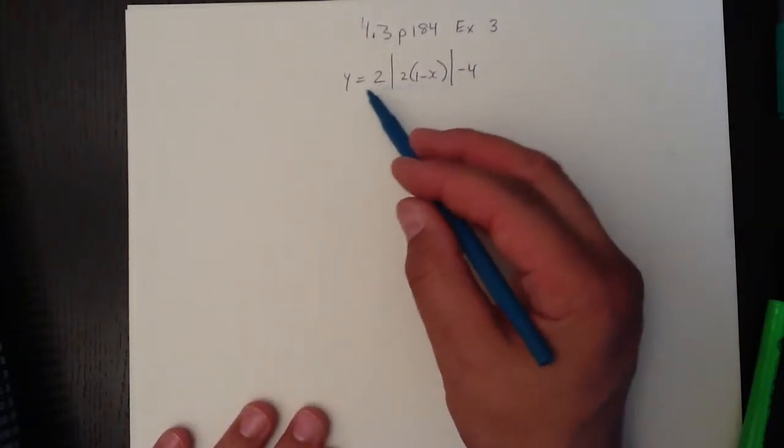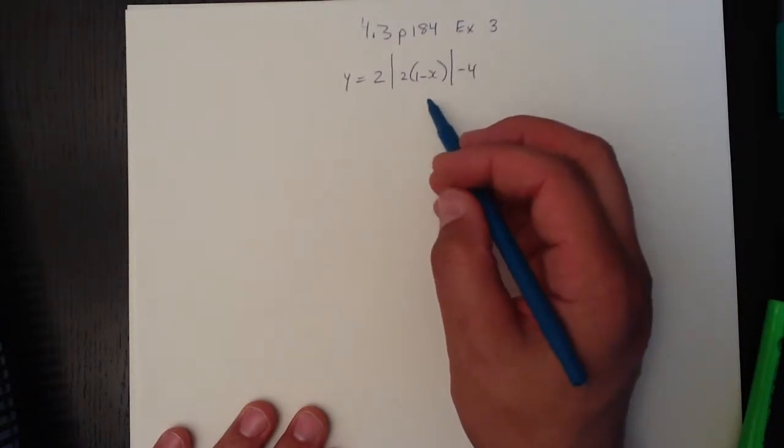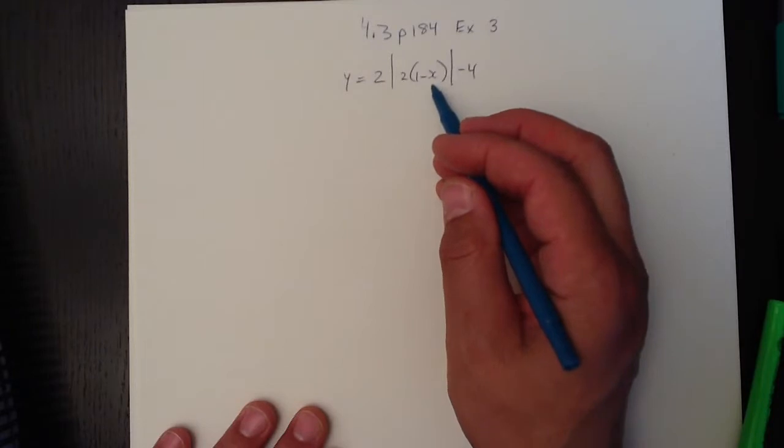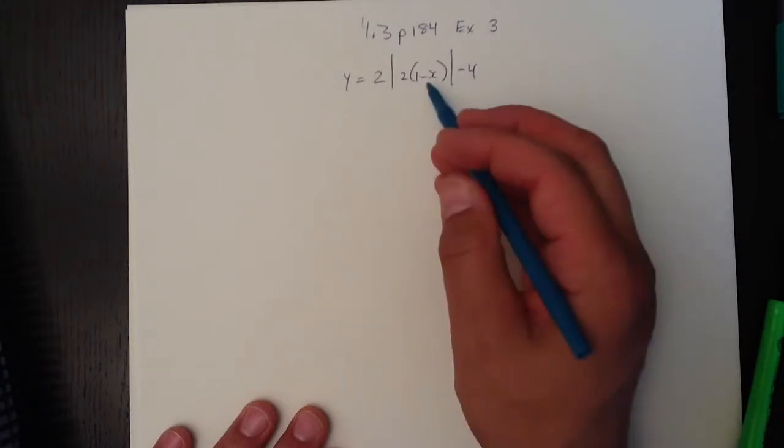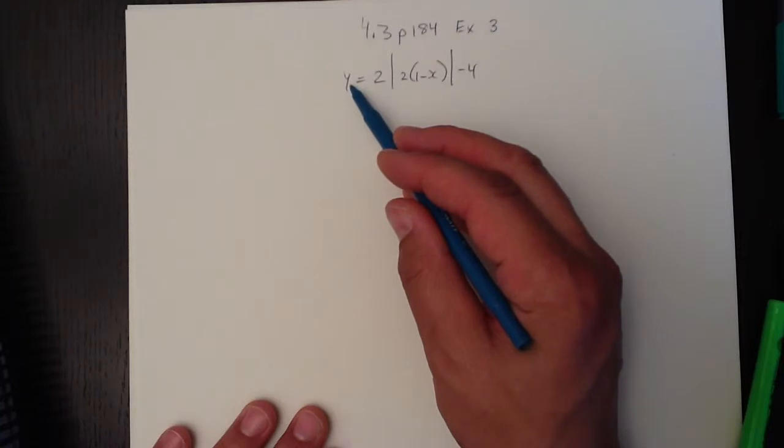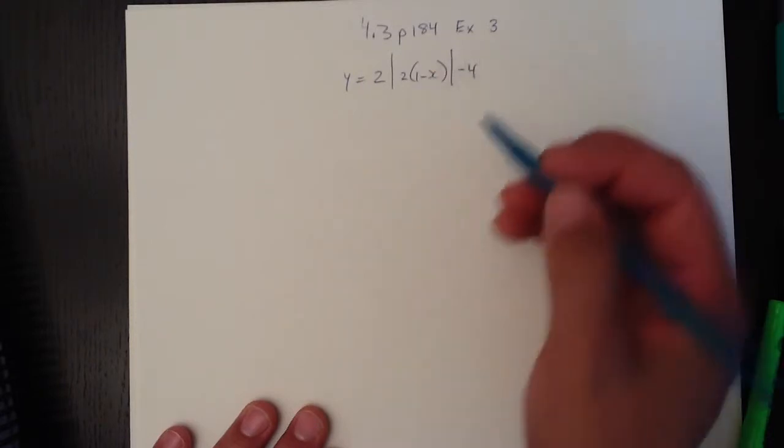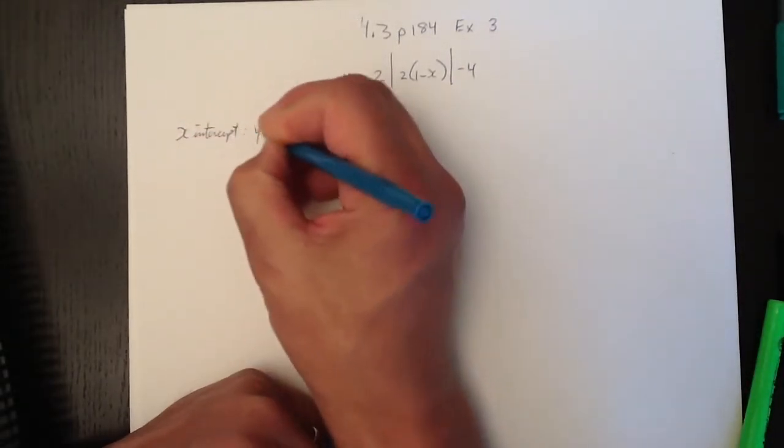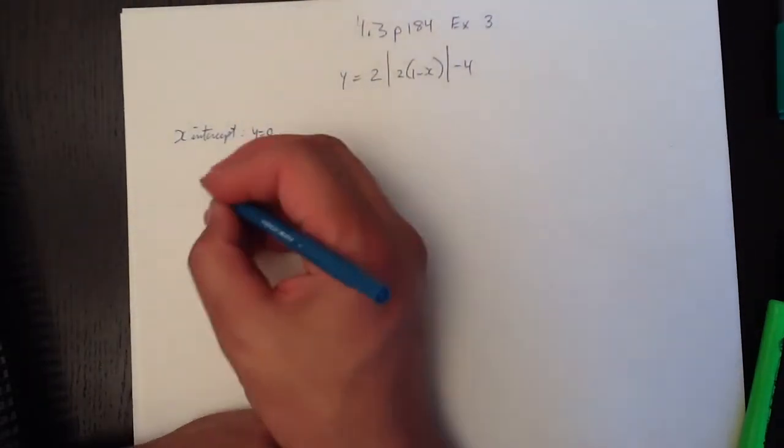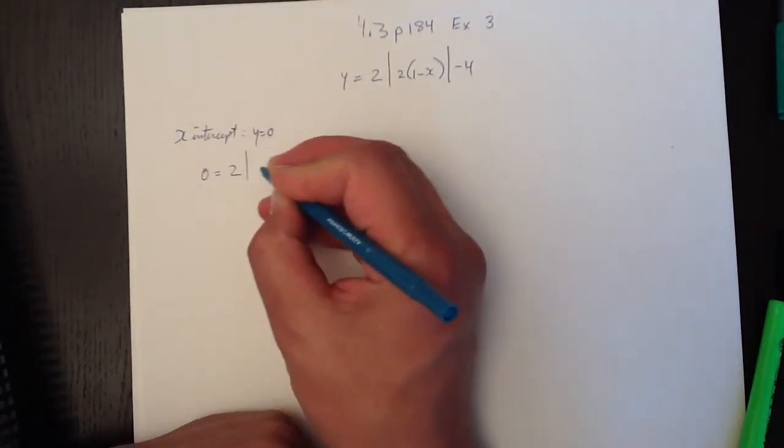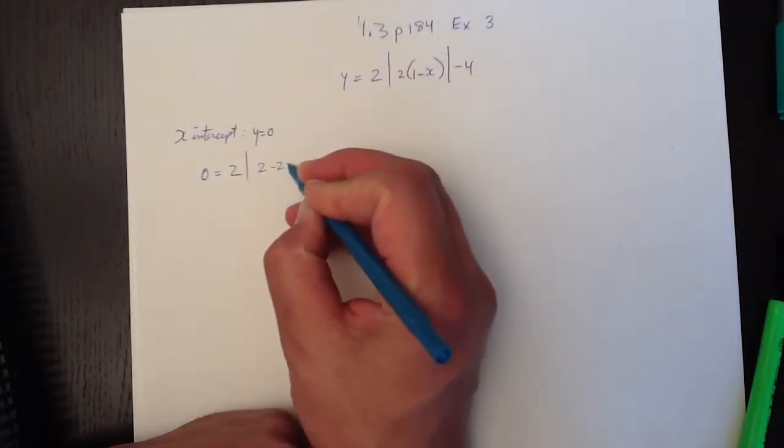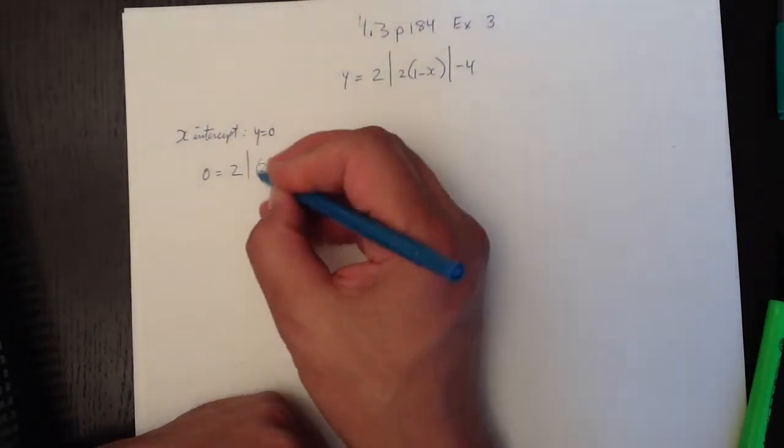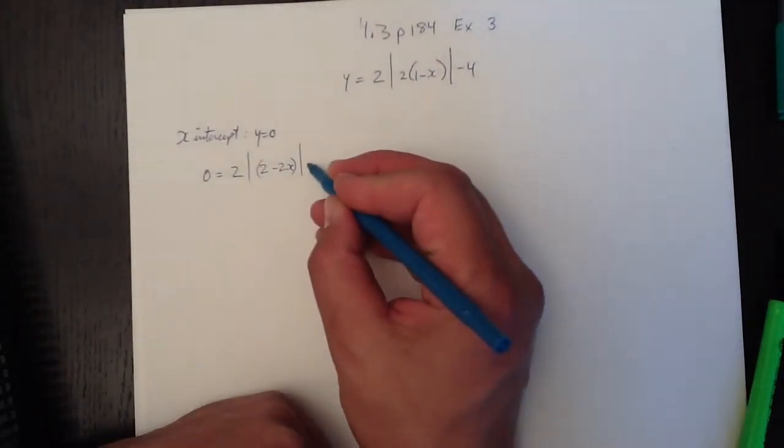So the intercepts will be where x equals zero, where x equals zero the graph will intercept the y-axis. Or sorry, where y equals zero, the line will intercept the x-axis. So x-intercept, y equals zero. So for y equals zero, we go zero equals 2 times the absolute value, I'm just going to work the 2 in there, 2 minus 2x. It'll be a lot easier to do that. I'll put it all in brackets too and I'll show you why in a minute, minus 4.